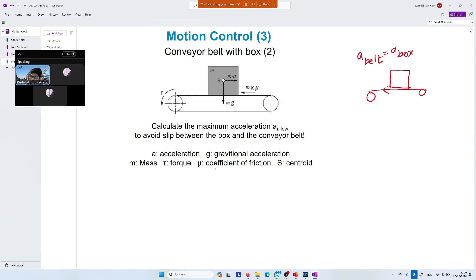If they have different velocities, then it means there's a relative velocity between the two surfaces, which equals slippage. We don't want that. If velocities are equal, for them to remain equal, the accelerations have to be equal. That's what we have here: a_belt equals a_box.